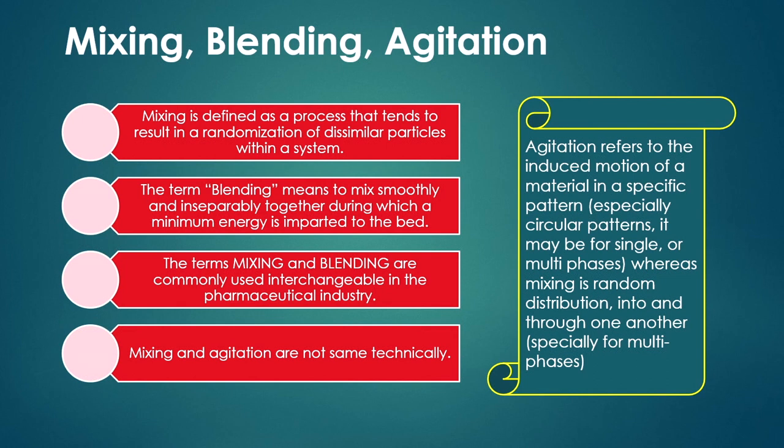The basic difference between agitation and mixing is that mixing and agitation are not technically the same. Agitation is the randomization or mingling of materials in a specific or particular pattern or fashion, and it happens for not only single phase but also multiphase. Mixing occurs among the phases in a multiphase system. Blending can be single or multiphase, but there will be a minimum energy requirement — very low kinetic energy dissipation — which is when it is called blending.